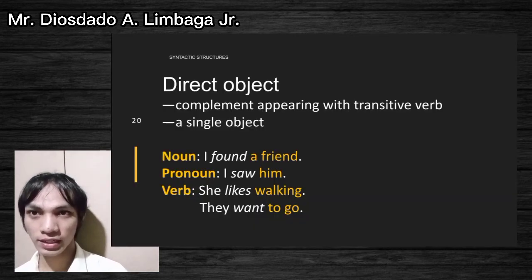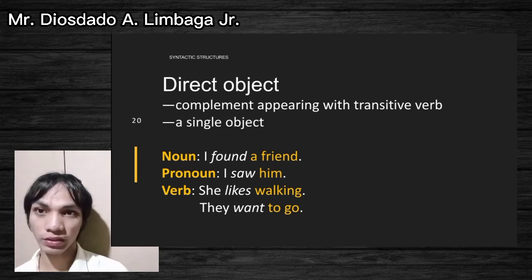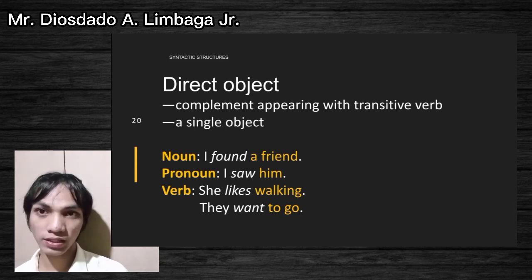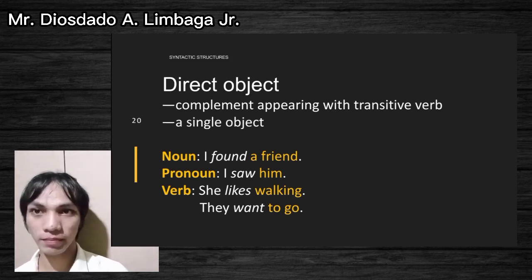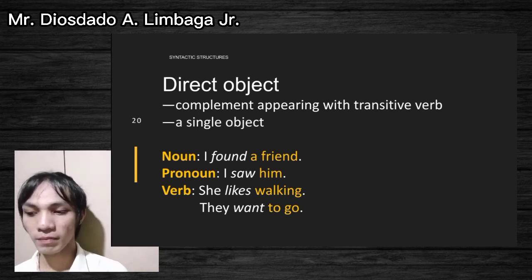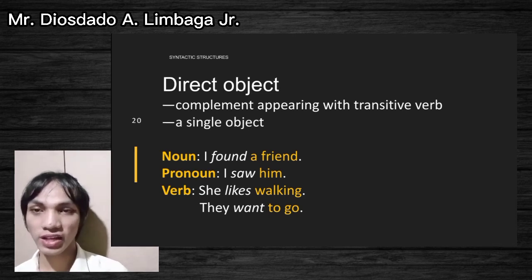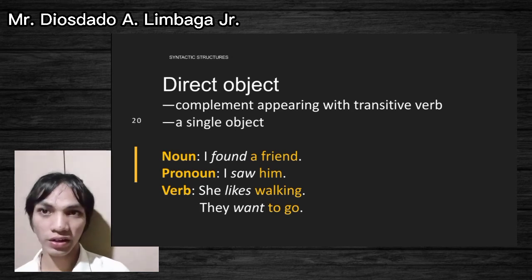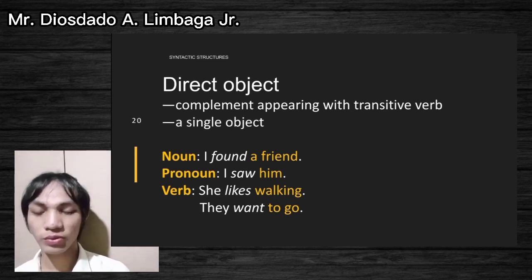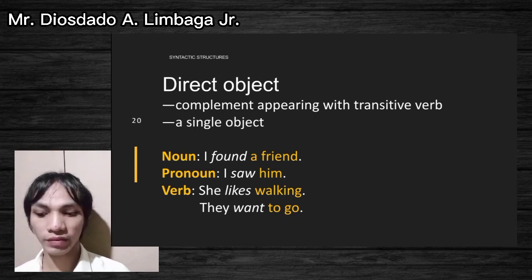The next type of complement is the direct object — a type of complement appearing with a transitive verb and referring to a single object. For noun: 'I found a friend' — 'a friend' is the direct object complement. For pronoun: 'I saw him' — 'saw' is the transitive verb and 'him' is the direct object. For verb (gerund): 'She likes walking' — 'likes' is the transitive verb and 'walking' is the direct object. Also: 'They want to go' — 'want' is the transitive verb and 'to go' is the direct object complement.